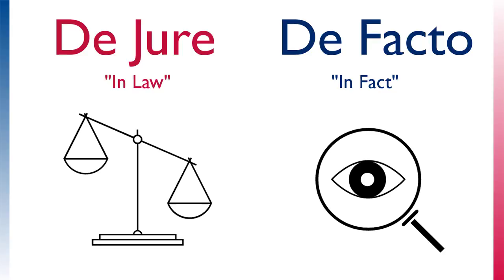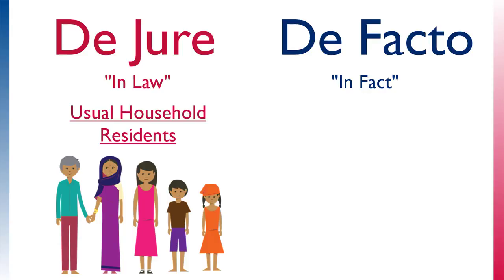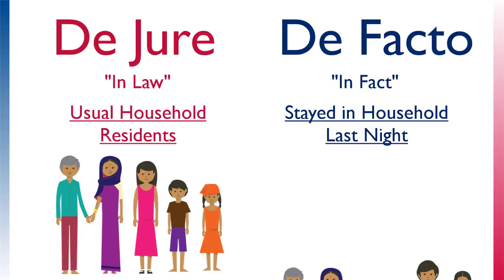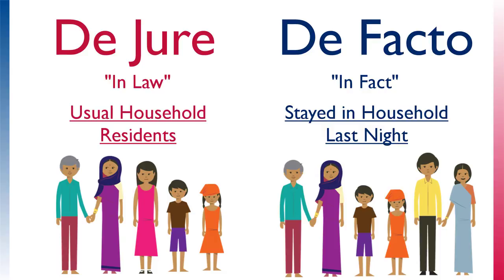So what do these words mean in DHS reports? De jure residents are all persons who are usual residents of the selected households, whether or not they stayed in the household the night before the interview. De facto means all persons who stayed in the selected households the night before the interview, whether usual residents or visitors.